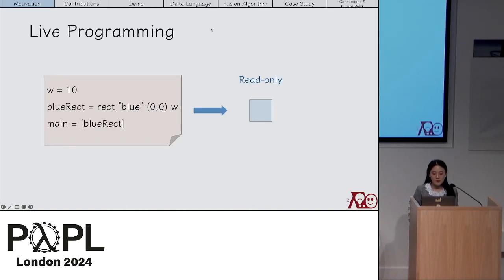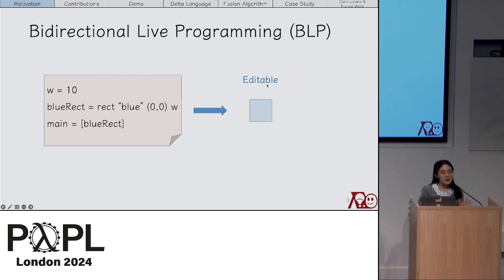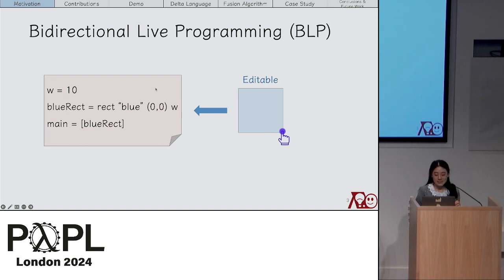Live programming enables developers to see real-time output changes while coding. After modifying variable W to 20, the output rectangle changes immediately without re-executing. A further step is bidirectional live programming, which allows developers to edit the output and reflect changes back to the source program. For instance, manipulating the rectangle size twice reflects back, changing variable W automatically to 20, so re-running produces the manipulated rectangle.